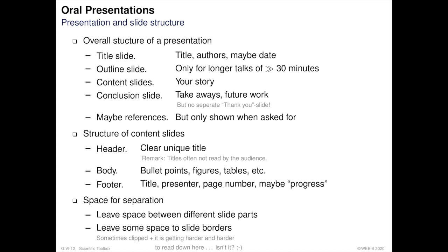The content slide should be structured as clearly as possible. Have a header at the top with a clear and unique slide title; the body of the slide contains all the information — use bullet points, figures, tables, etc. The footer includes the title of the talk, the presenter, the page number, and optionally a progress indicator. Leave space for separation between different slide parts, and avoid putting too much information on one slide.